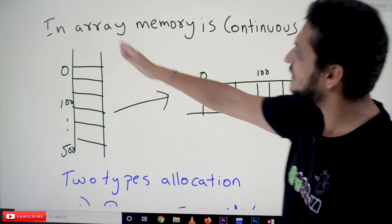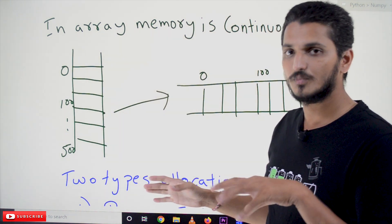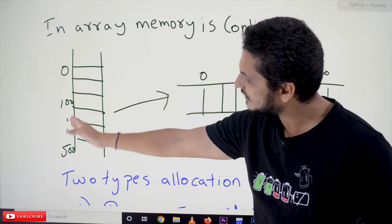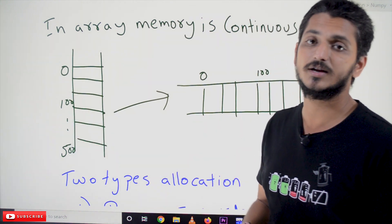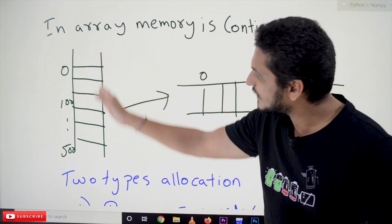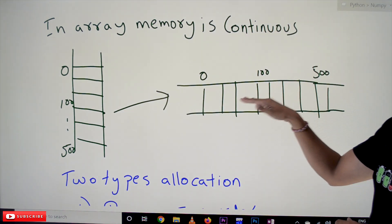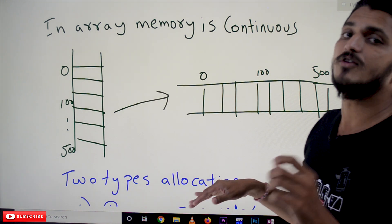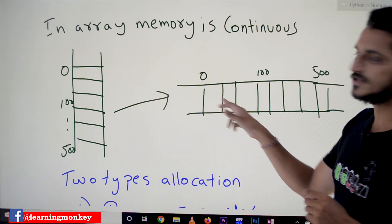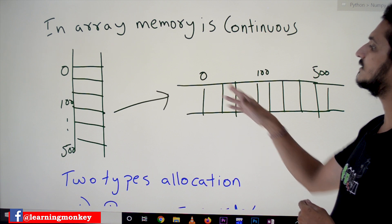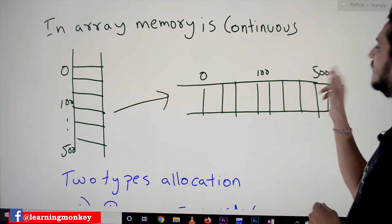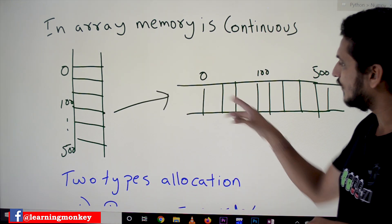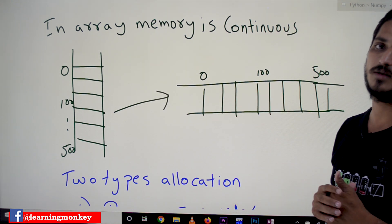So before going into memory allocation for arrays, this is our random access memory with 0th memory address, 100th memory address, 500th memory address, and so on. For better understanding of the concept of memory allocation for arrays, we are converting our random access memory representation into a horizontal axis. From now onwards we will use this horizontal notation for the random access memory.